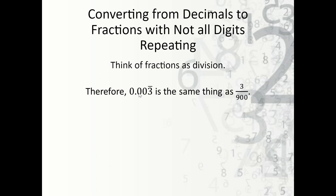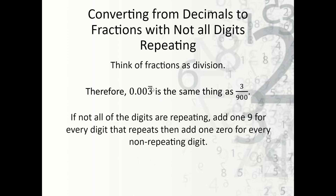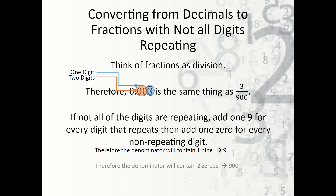Now we have 0.003 repeating, and that equals three over 900. For every digit that's repeating, we include a nine; for every digit that's not repeating, we include a zero at the end. One digit is repeating — one nine; two digits are not repeating — two zeros. So we get 900 as the denominator, then keep the value three, giving three over 900.